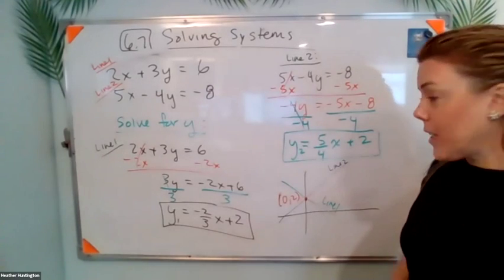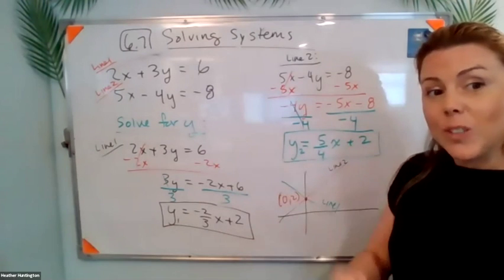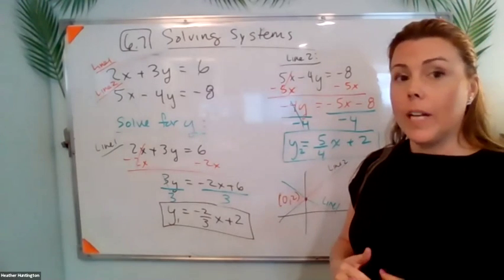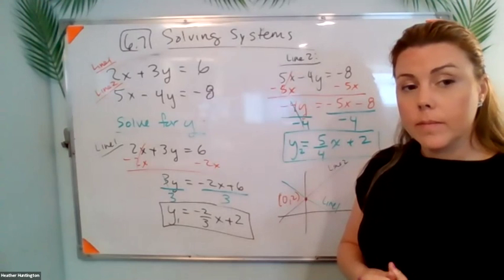Good. I like that logic. Remember a solution is an intersection point. If there's no solution that means they don't intersect. What types of lines don't intersect? Parallel lines.